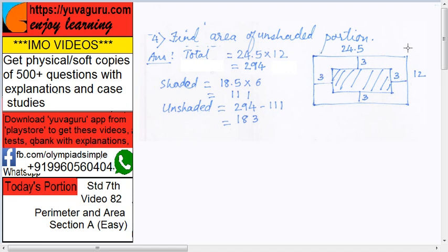So first find the area of the bigger rectangle, total 24.5 into 12. So that becomes 294.